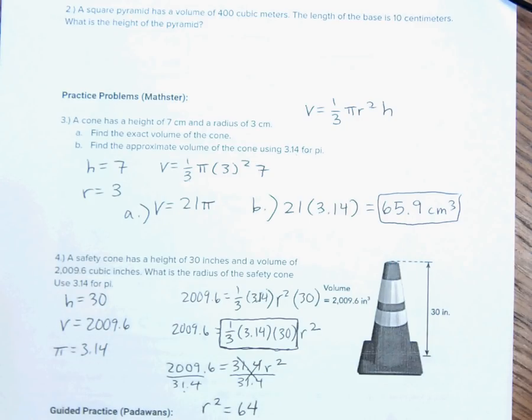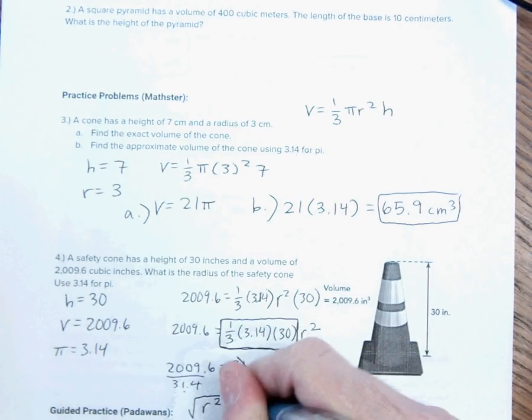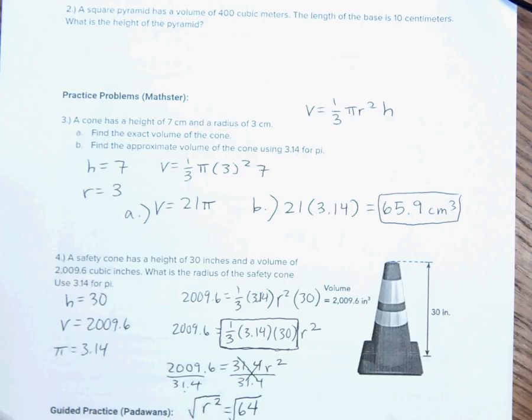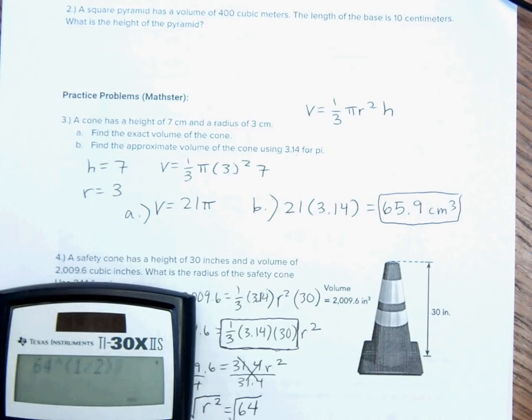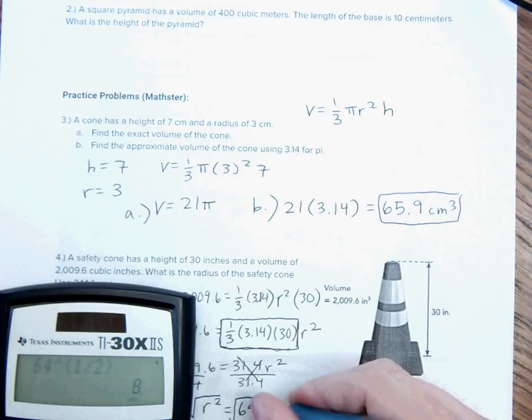Step two of solving this equation is I'm going to divide by 31.4. And so, that will cancel out. I'll be left with R squared equals 2009.6 divided by 31.4. That's actually 64. So, the last step is, how do I get R by itself? Well, if I square something, I need to go backwards. The way you go backwards is to take the square root. So, I'm going to take the square root.